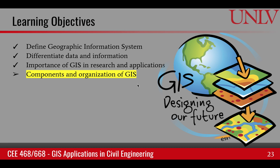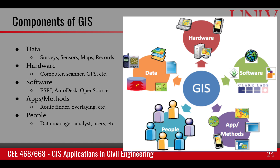The last learning objective of this module is the components and organization of GIS. There are five components of a GIS, or geographic information system. The first one is data — data with spatial context. This data comes from surveys, sensors, historical maps, and historical records. All in all, this data is what is stored, processed, and analyzed in a GIS system.